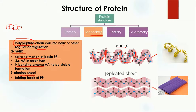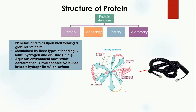The second secondary structure is the beta pleated sheet, which is formed by the folding back of the polypeptide. Here you can see the primary structure folding onto itself to form the beta pleated sheet. It is similar to making a paper fan — when you fold the paper on itself you get this kind of formation. Similarly, when amino acid chains fold back on each other, they form the beta pleated sheet.